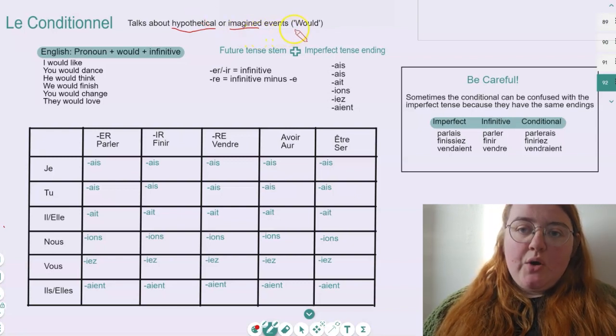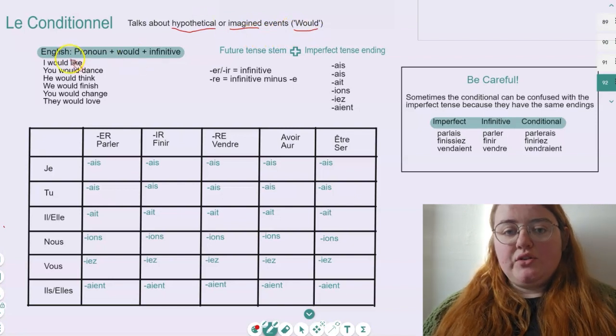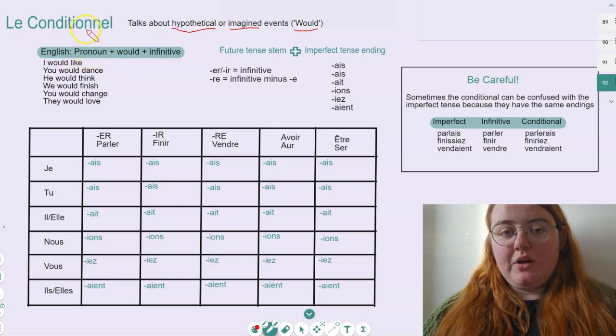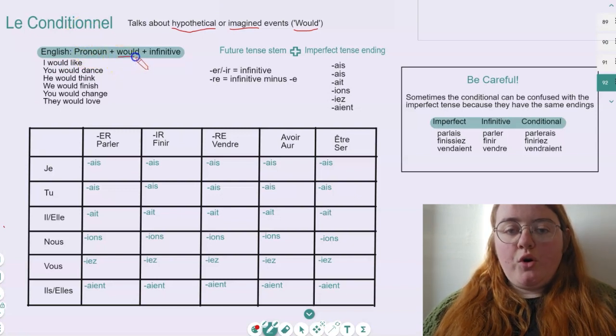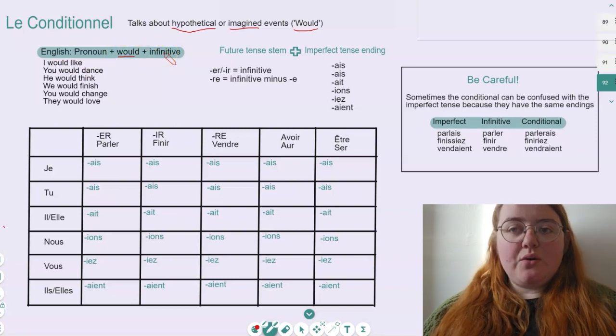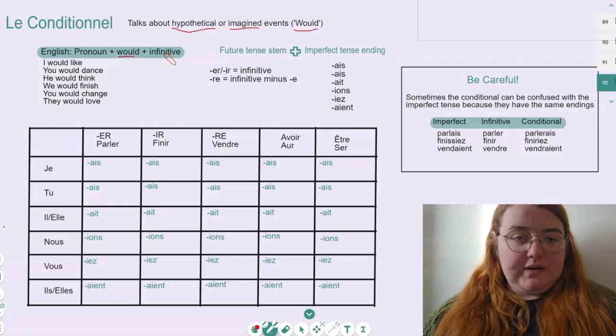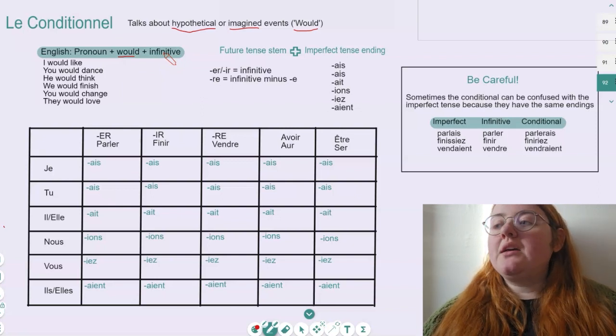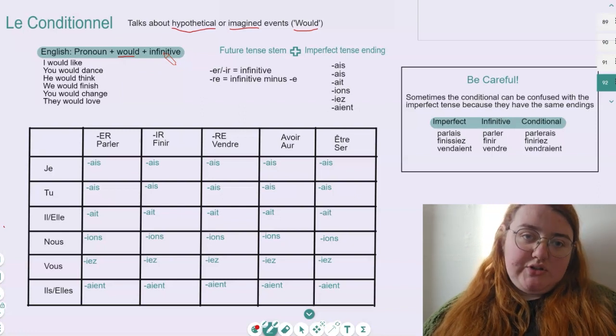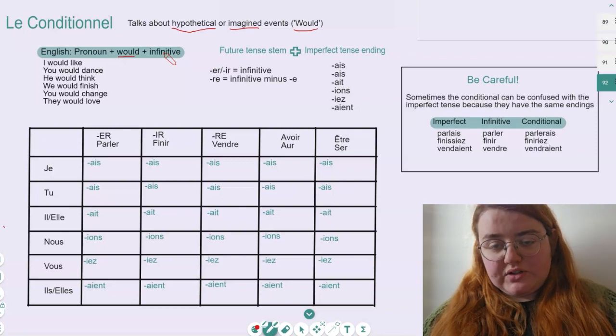For example, in English we would usually say the word 'would' when using the conditional tense. We want to start our conditional in English with a pronoun - I, he, you, they - then we want the word 'would', and then after that, we want the infinitive, which is just the original version of our verb before any conjugations. So, for example, 'I would like to travel' - that is a conditional tense. 'We would finish the race' is also a conditional tense.